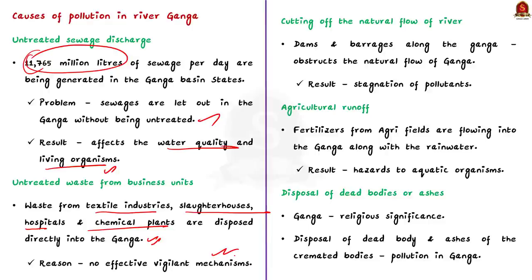The third cause is cutting off the natural flow of the river. Dams and barrages along the Ganga obstruct its natural flow. When the natural flow of the river is unobstructed, pollutants keep moving downstream. But obstructing the natural flow does not allow pollutants to move, which aggravates the already existing pollution.